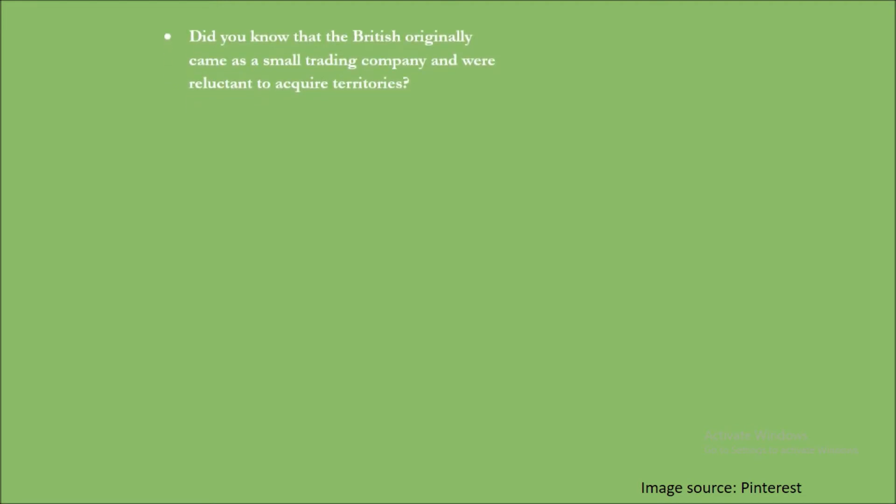Now, to understand the East India Company's initial arrival to India — did you know that the British originally came as a small trading company and were reluctant to acquire territories? They came only to do trading and were not interested in acquiring territories in India. But then why did they come to be masters of a vast empire? What made them change their initial approach into the opposite one?